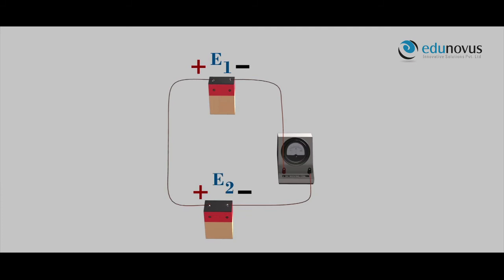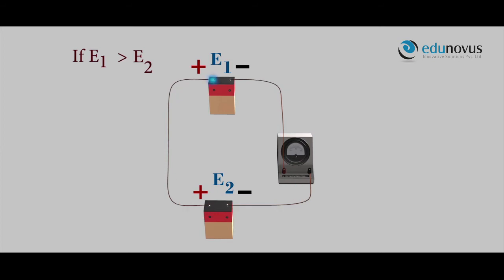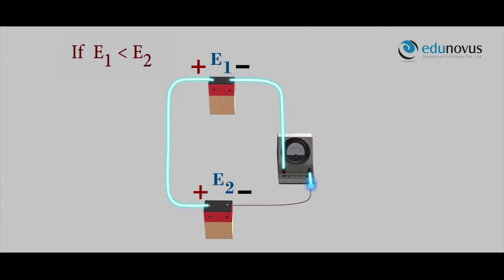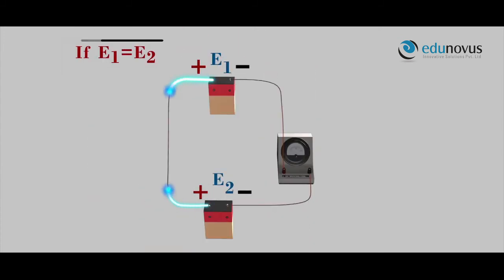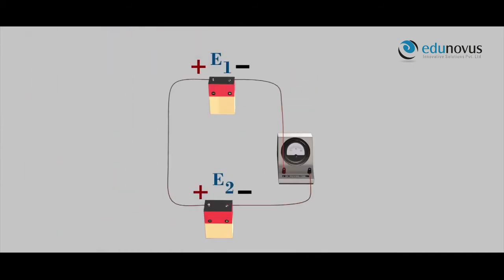The second principle on which the potentiometer works: when two cells of EMFs E1 and E2 are connected in a circuit such that their positive ends are connected together and their negative ends together with a galvanometer, the current from cell E1 flows in the anti-clockwise direction while the current from cell E2 flows in the clockwise direction. If E1 is greater than E2, the galvanometer deflects towards left. If E1 is less than E2, it deflects towards right. If E1 equals E2, the galvanometer shows null deflection — no current flows in the circuit.